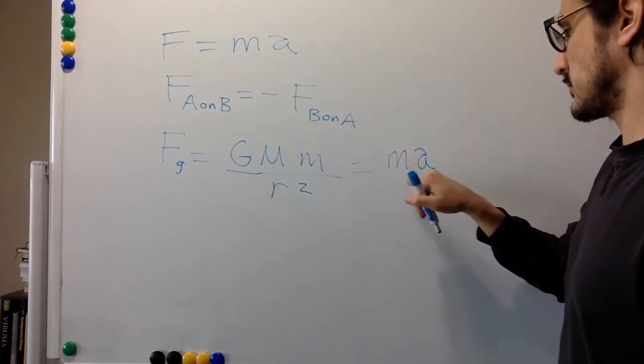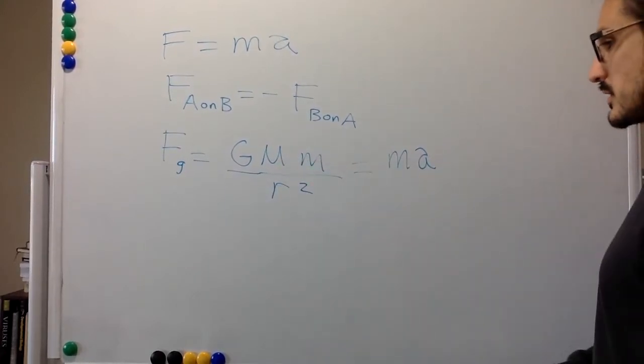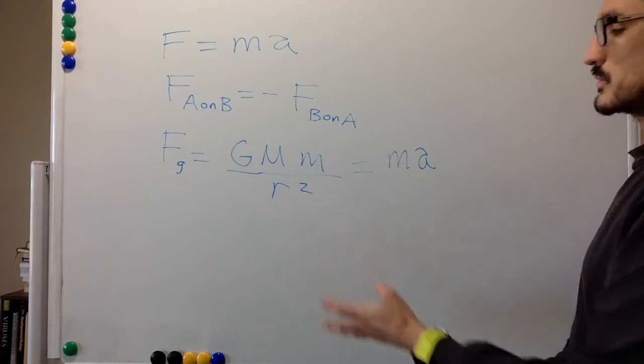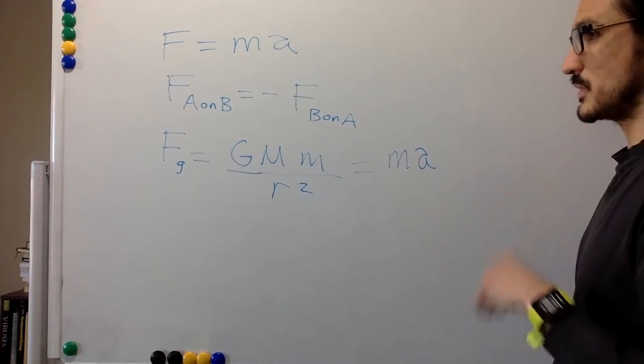And so this is an object with mass little m. So then big M will be the mass of the earth. And R will be the radius of the earth.